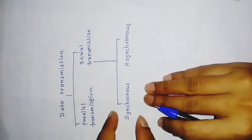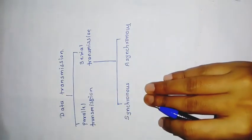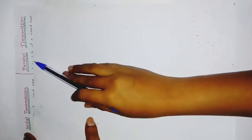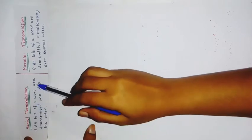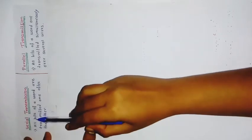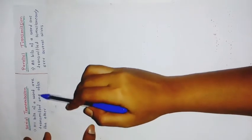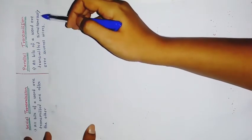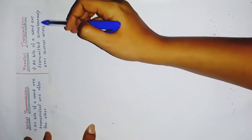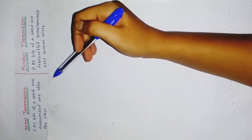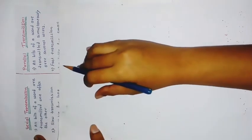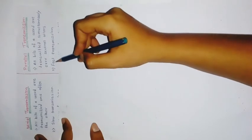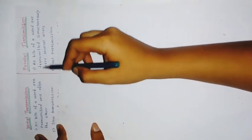We will see the difference between serial transmission and parallel transmission. The first point is that in serial transmission, all bits of a word are transmitted one after the other. In parallel transmission, all bits of the word are transmitted simultaneously over several wires. In serial transmission it is slow, and in parallel transmission it is fast.